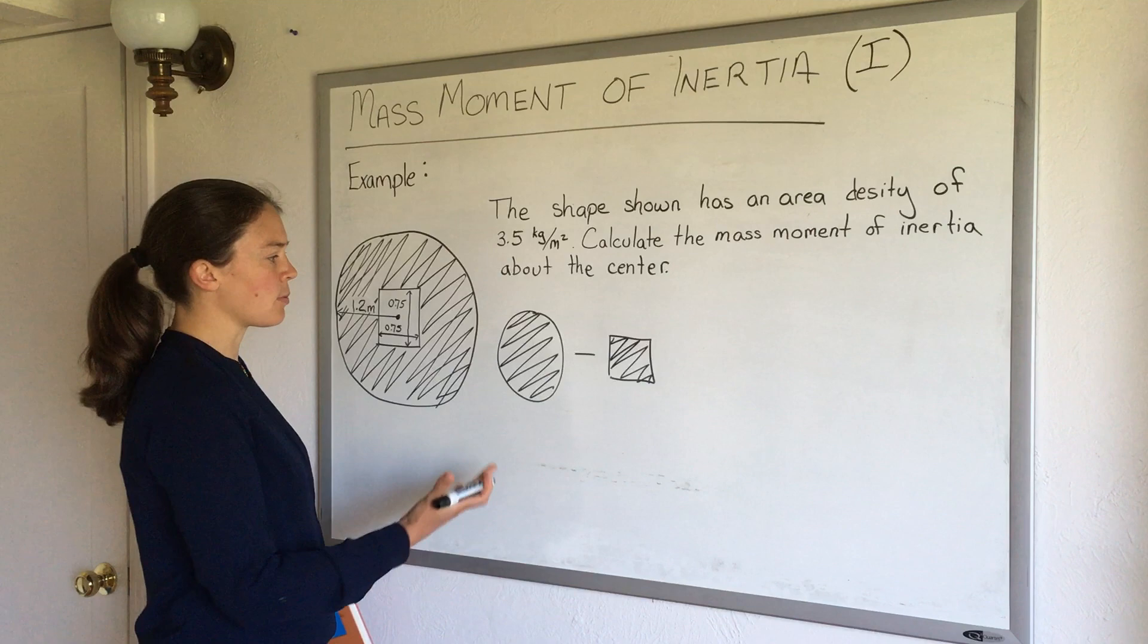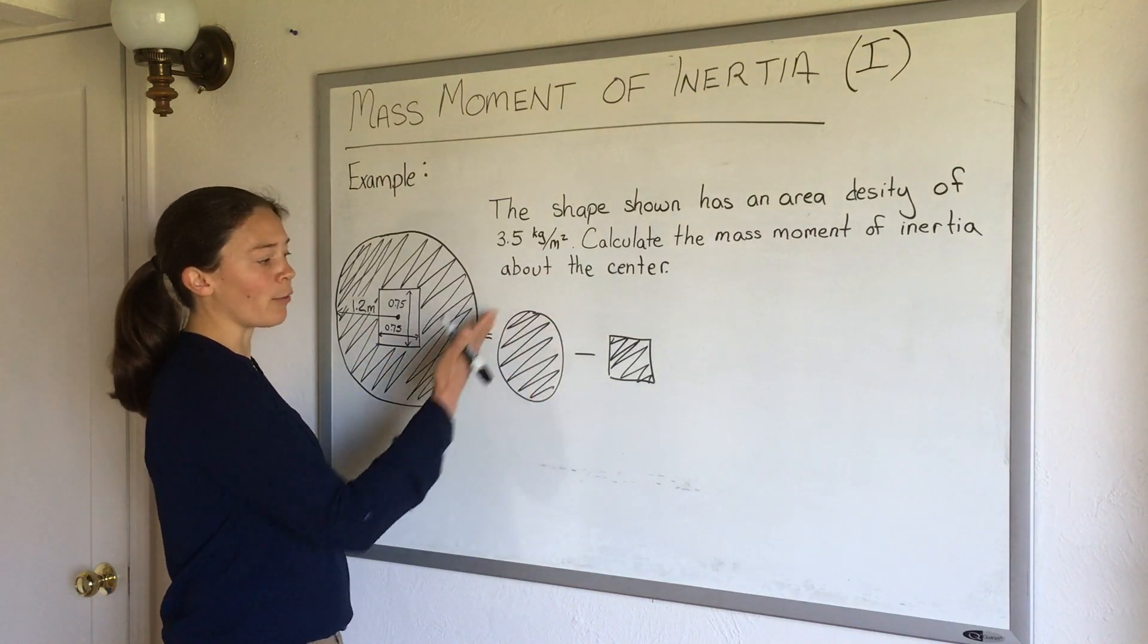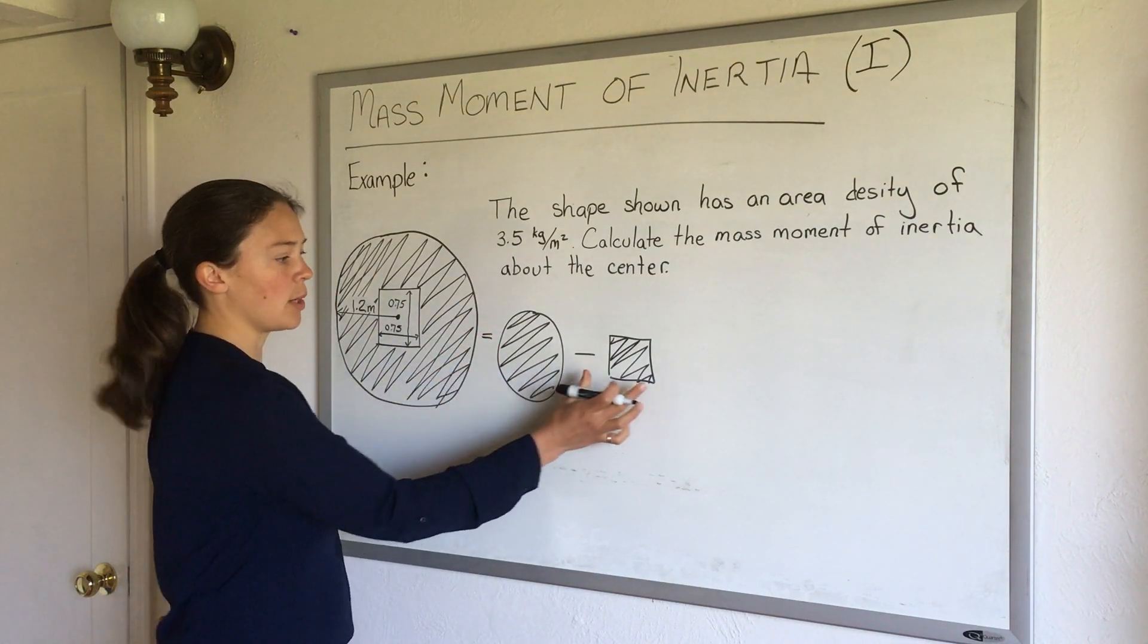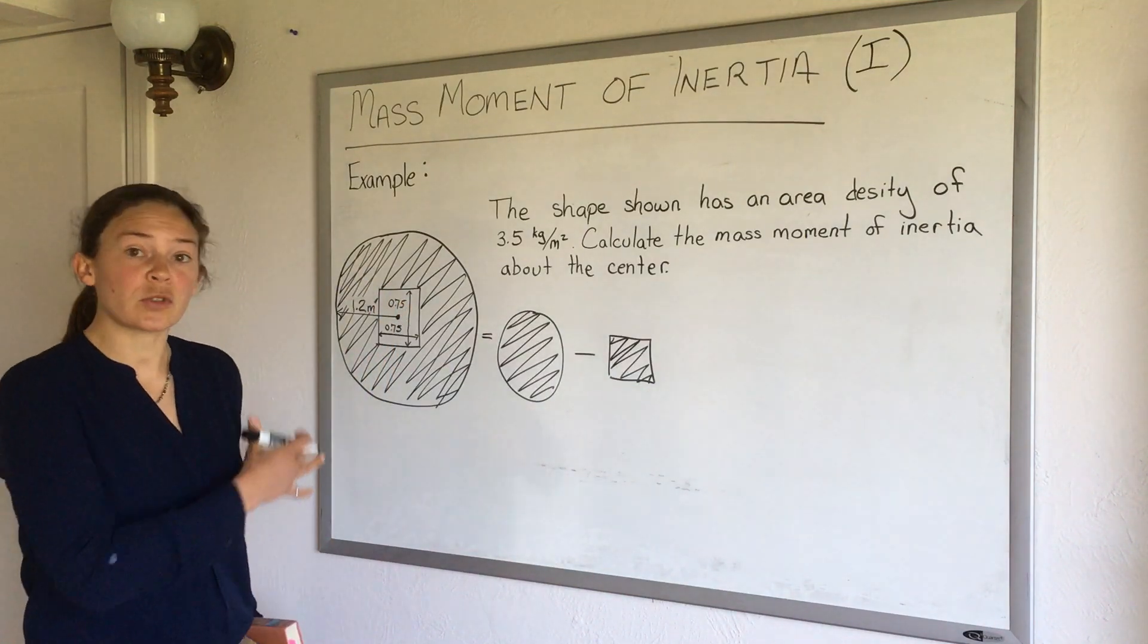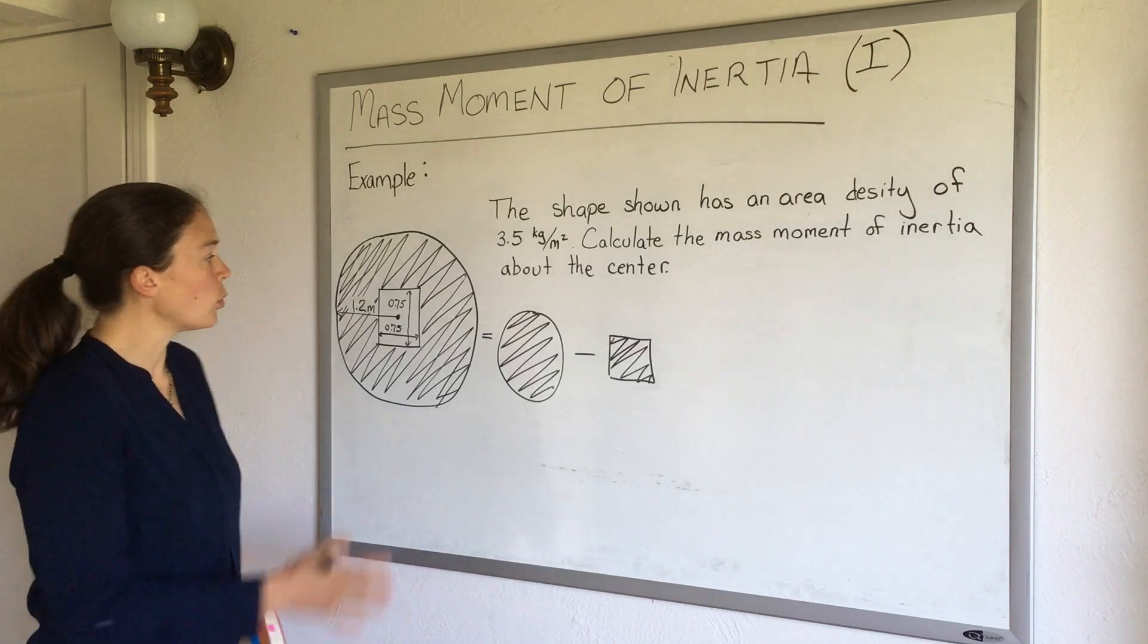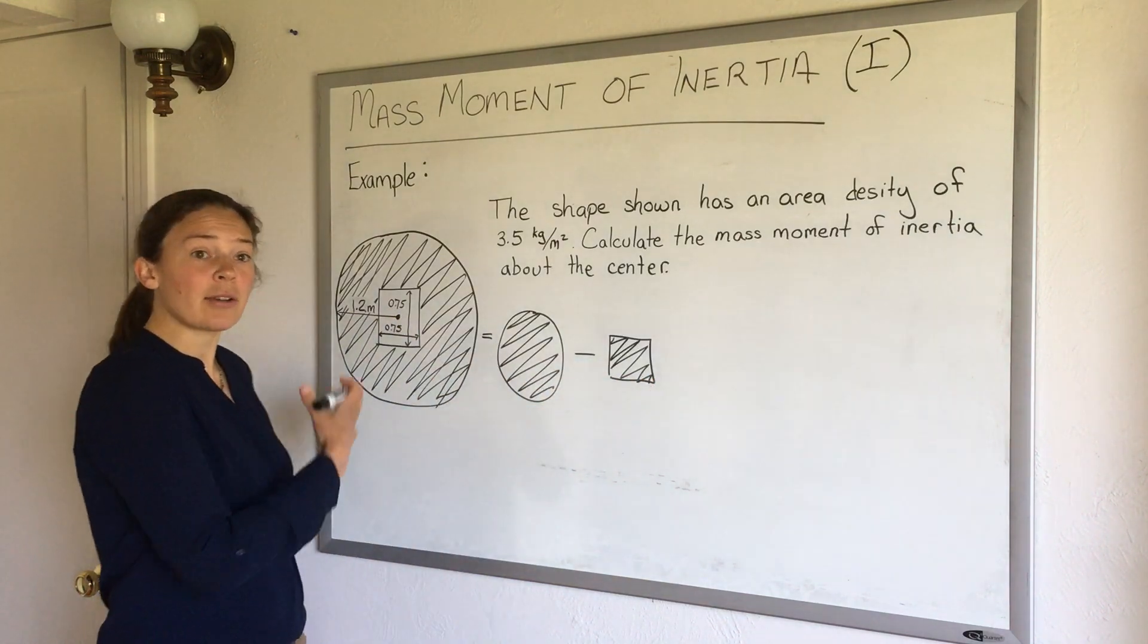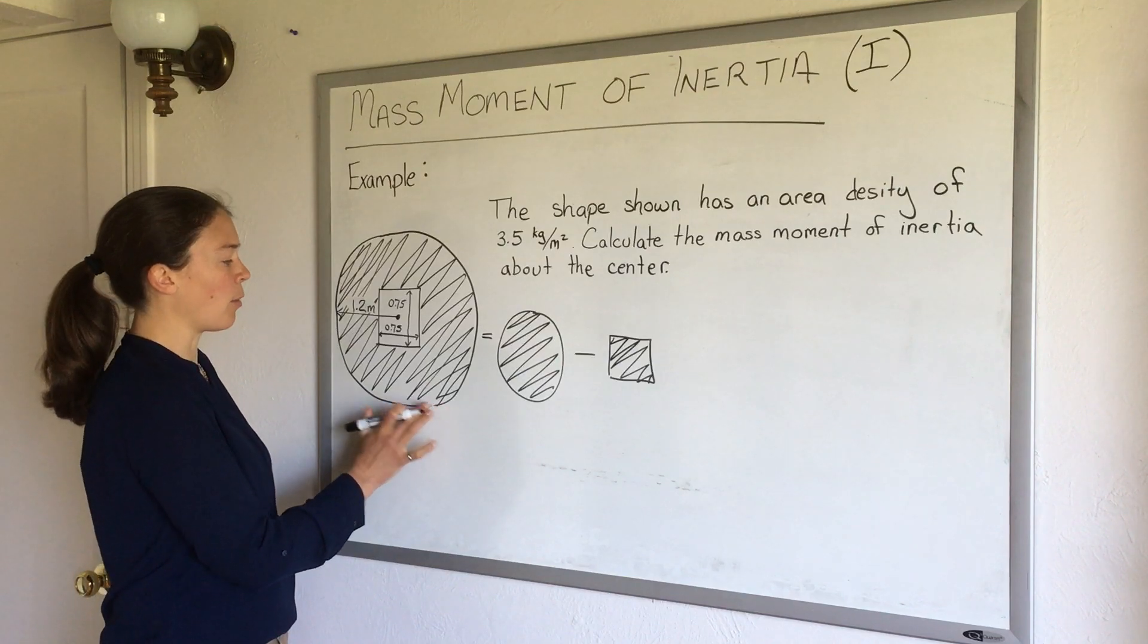And in fact we can calculate the mass moment of inertia of this shape by doing this math. Assuming that we have the solid circle and subtracting out the square. So this works for all sorts of addition and subtraction in mass moments of inertia. If we had another shape added in here, maybe we had a circle in the middle, then we could add that circle in. We can calculate as much addition and subtraction as we need to get the shape that we are given.